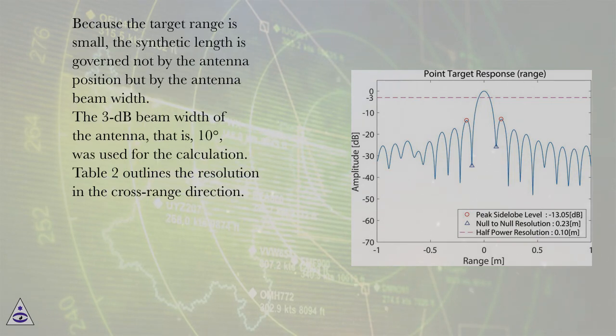Because the target range is small, the synthetic length is governed not by the antenna position but by the antenna beam width. The 3 dB beam width of the antenna, 10 degrees, was used for the calculation.